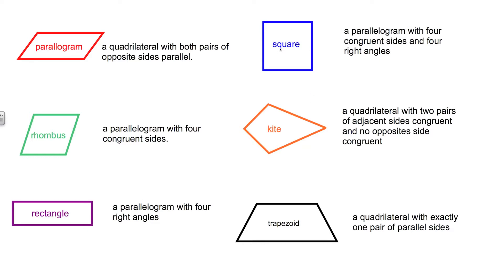Here in the blue we have a square. Some of these shapes you definitely should be familiar with. A square is defined as a parallelogram with four congruent sides and four right angles. So a square is a special parallelogram that has four sides that are equal and has 90 degree angles, all four of them.